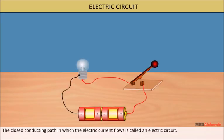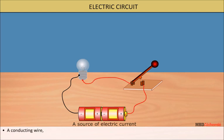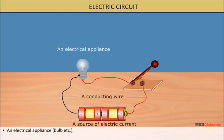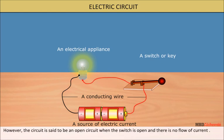The closed conducting path in which the electric current flows is called an electric circuit. An electric circuit constitutes a source of electric current such as cells, a conducting wire, an electrical appliance such as bulbs, and a switch or key. When the switch is closed, the circuit is said to be a closed circuit — current flows and the appliance works, for example the bulb glows. However, when the switch is open, it is called an open circuit and there is no flow of current.